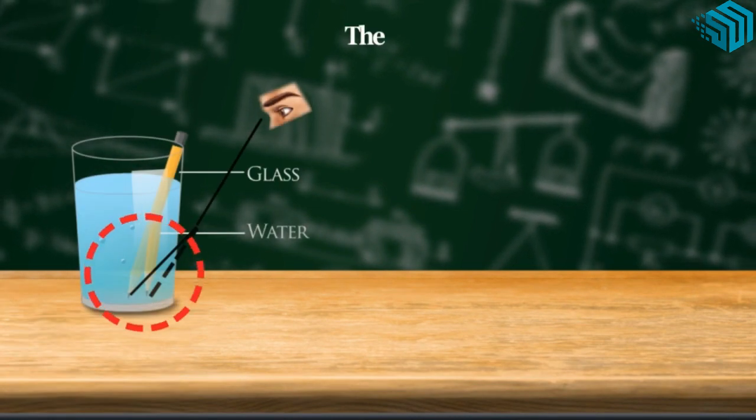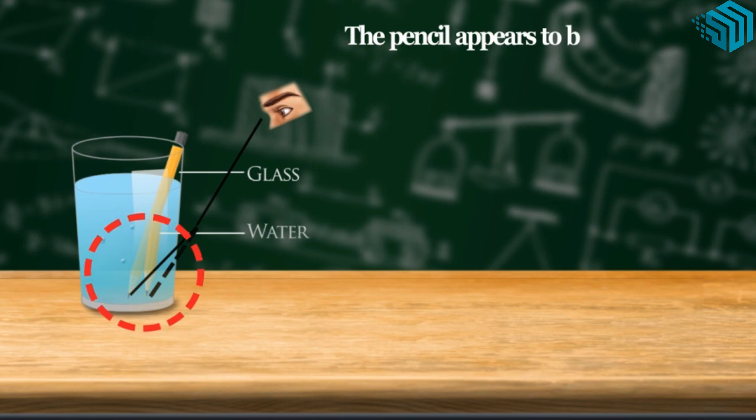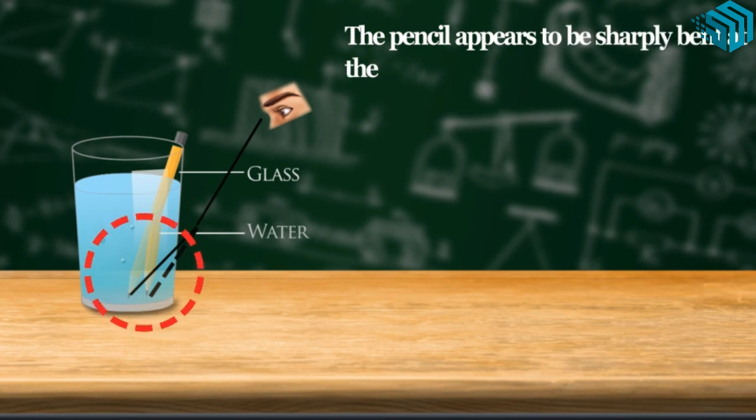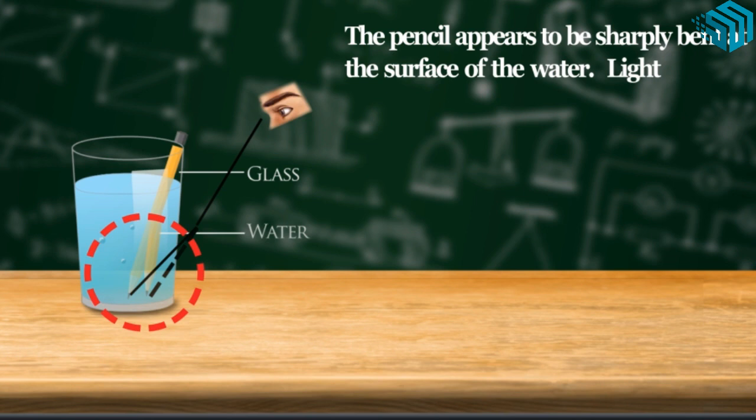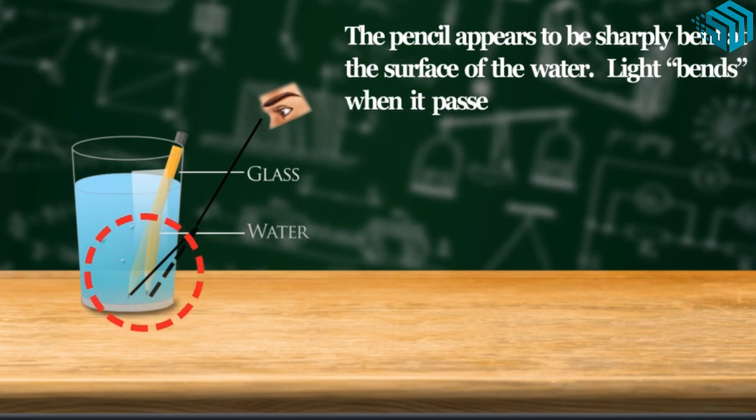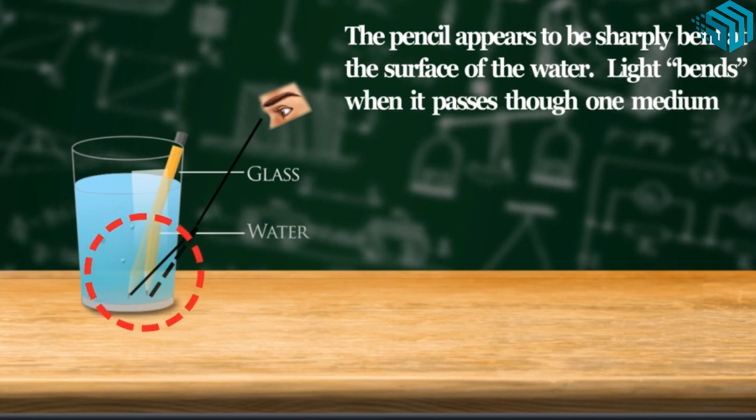The pencil appears to be sharply bent at the surface of the water. Light bends when it passes through one medium to another of a different density.